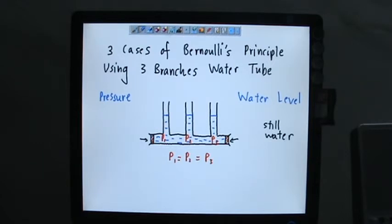When water is not moving at all, the pressure at all points are the same. So at point one, point two, point three, the pressure one equals to pressure two equals to pressure three. So if the pressure is the same,